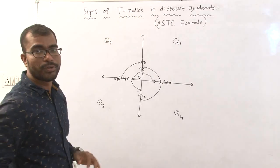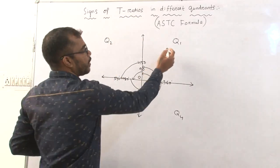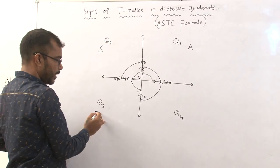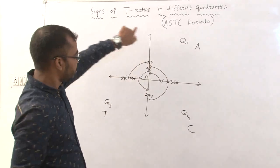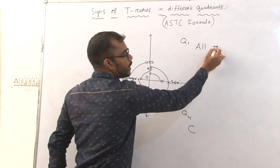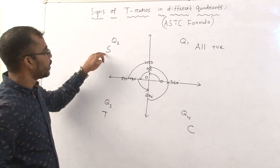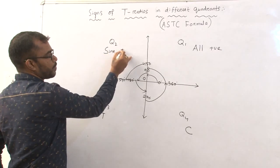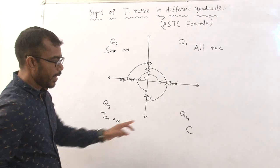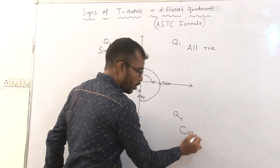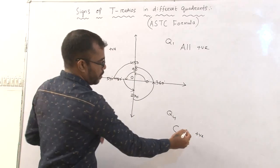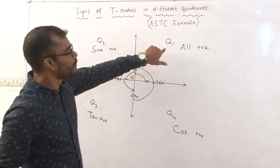Now, what is the ASTC formula? In the first quadrant, A stands for All — meaning all t-ratios are positive. In the second quadrant, S means sine is positive. In the third quadrant, T means tan is positive. In the fourth quadrant, C means cos is positive. So the ASTC rule tells us which t-ratios are positive in each quadrant.